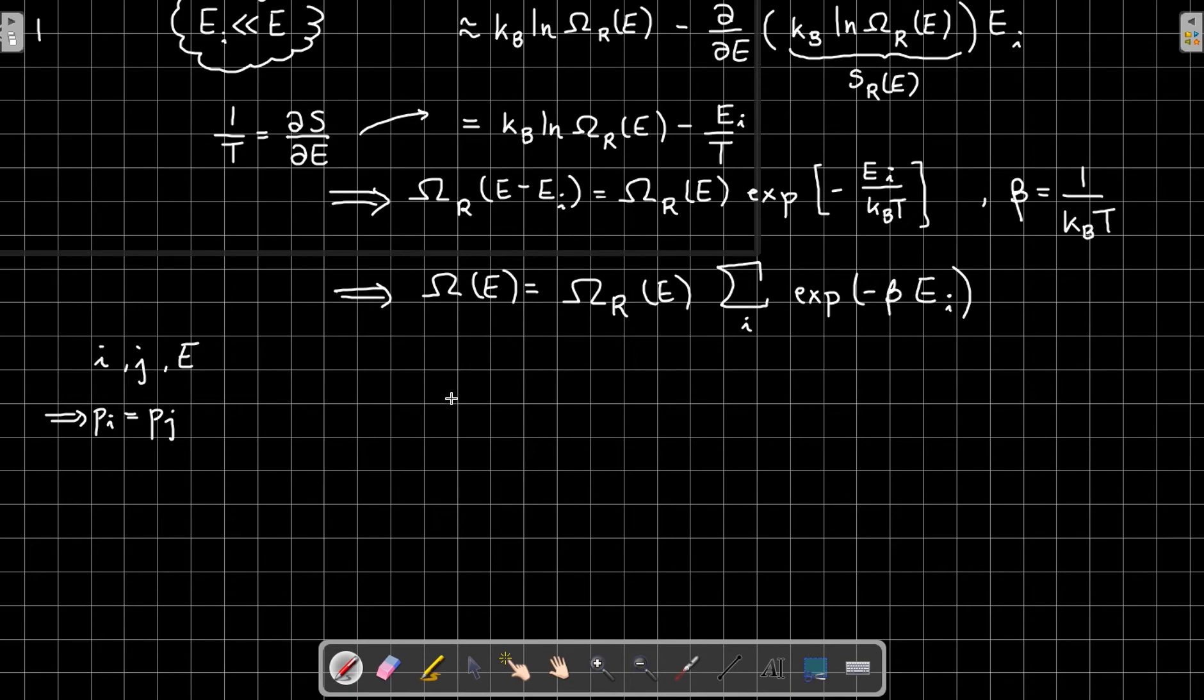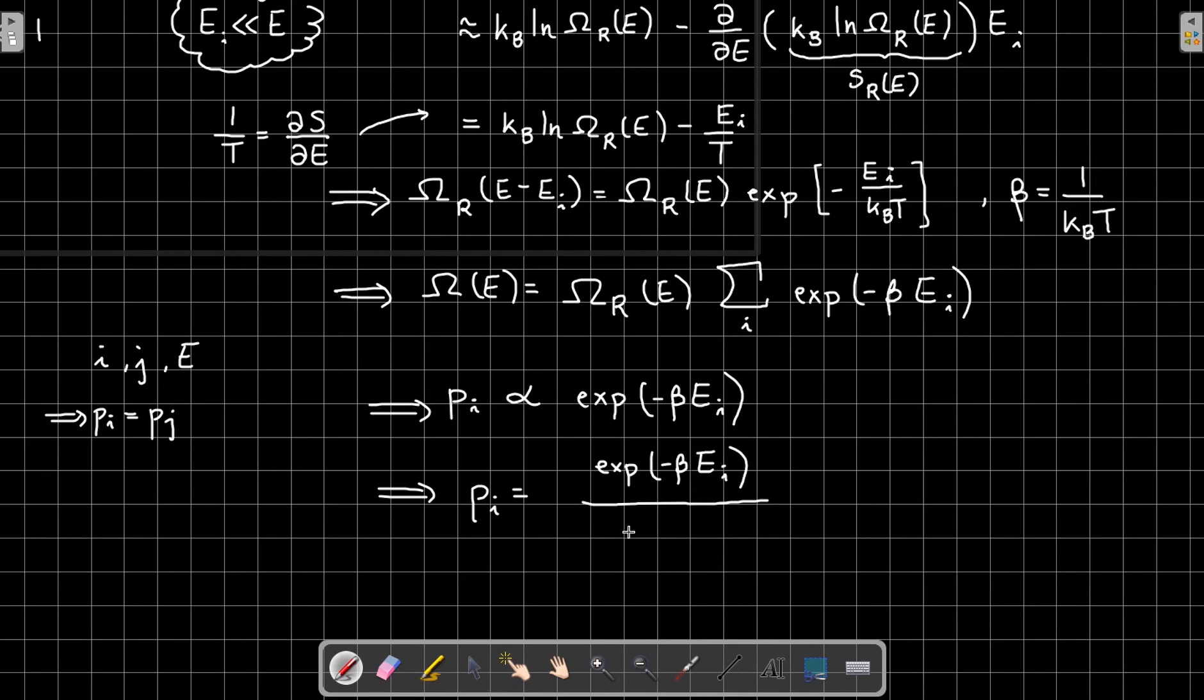What this tells me is that the probability of finding the system in a microstate i must be proportional to the number of microstates of the total system where the subsystem is in energy i. So this must be proportional to the exponential of minus beta times E_i. And now I just have to normalize. If I normalize this, I get exponential of minus beta E_i over the sum of the exponential of minus beta E_j, and the sum is over j.